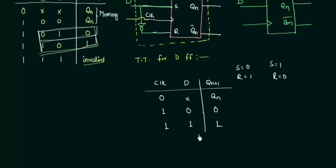And the other cases like S equal to 1, R equal to 1 is not possible in this D flip-flop because you can see an inverter attached here and simply we cannot have this configuration. So this is the truth table for your D flip-flop. A very simple truth table.